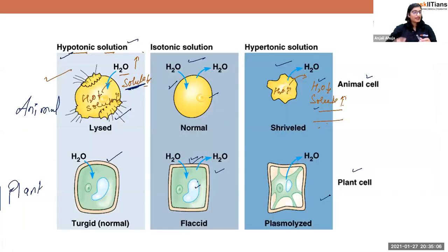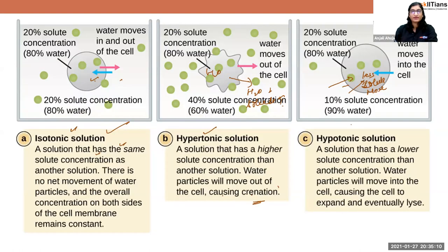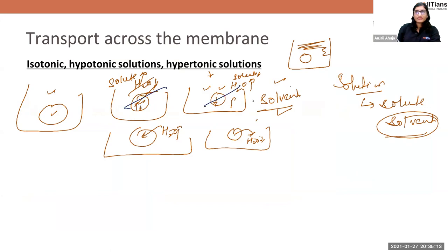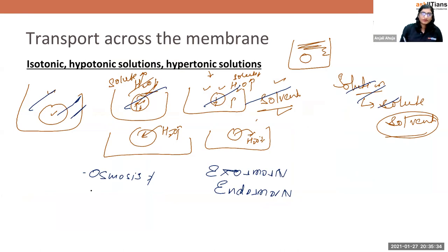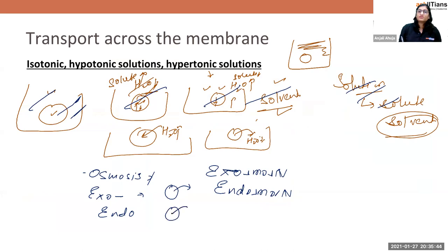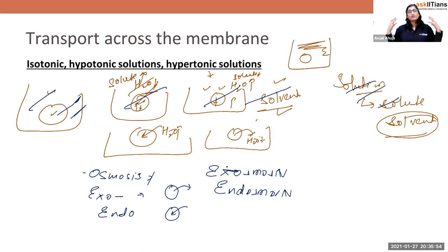Osmosis is of two types: exosmosis and endosmosis. In exosmosis, material moves outside the cell. In endosmosis, material moves inside the cell. Simply remember: exosmosis — molecules moving outside; endosmosis — molecules moving inside.